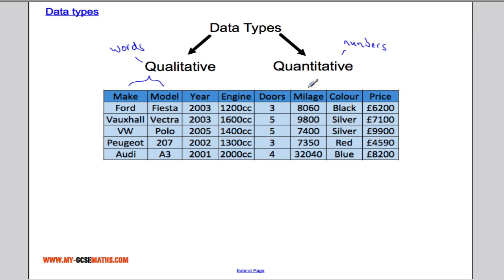And over here you can see mileage, doors, price. They all involve numbers, so they're all quantitative data types.